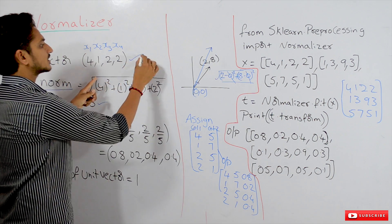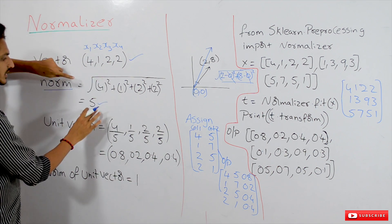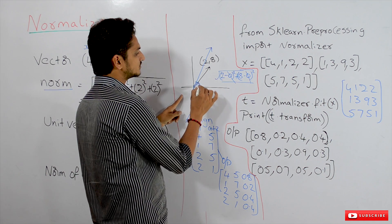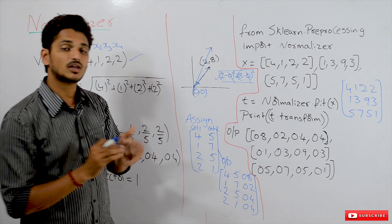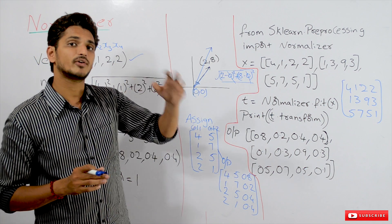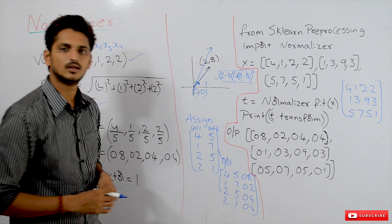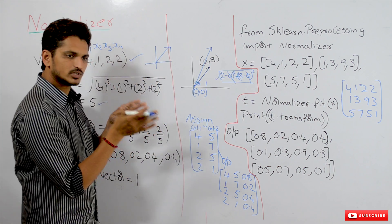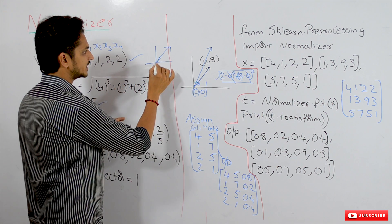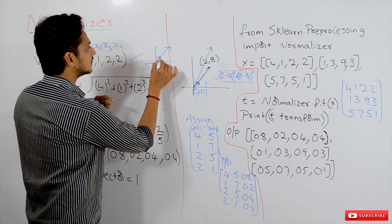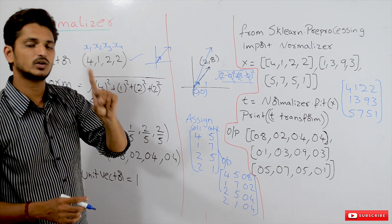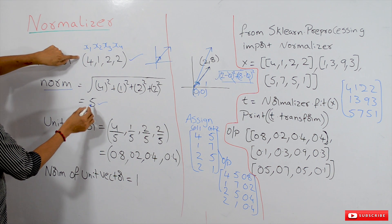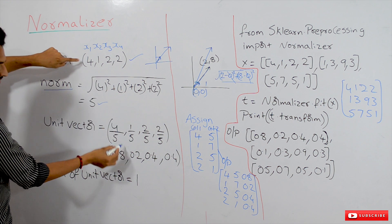Now, the unit vector of a given vector moves in the same direction as that vector, but the norm of the unit vector — its length from the origin — is 1. That is what a unit vector means. To calculate the unit vector, take the original vector, find its norm, and divide the vector by that norm. The resultant is the unit vector.